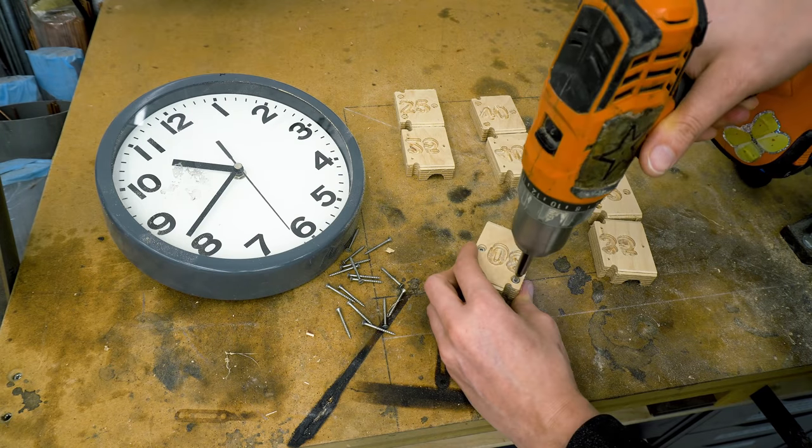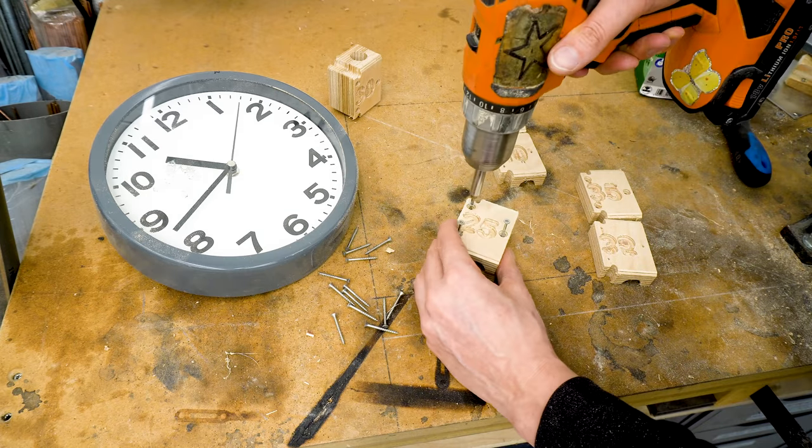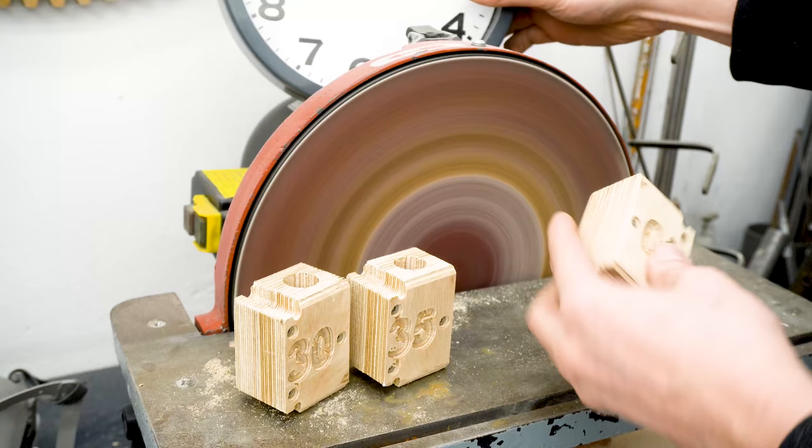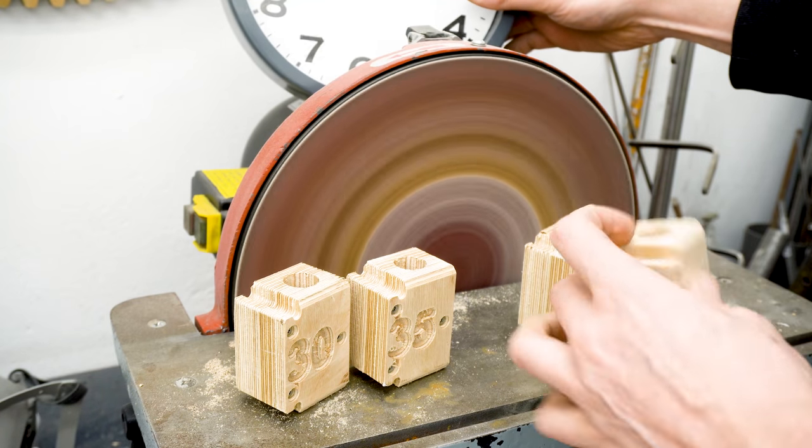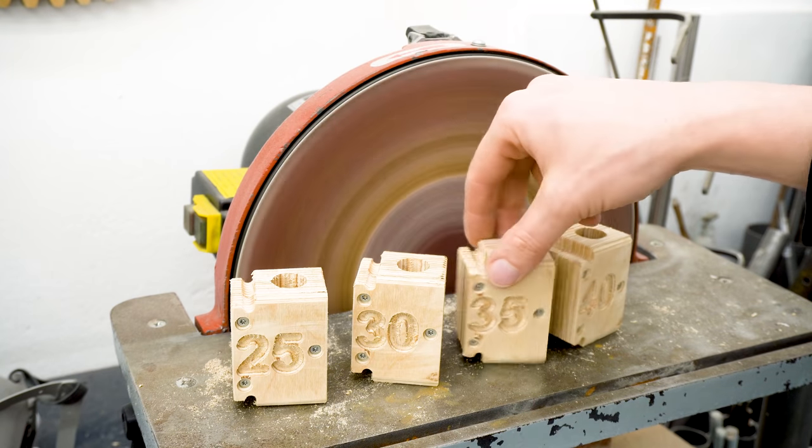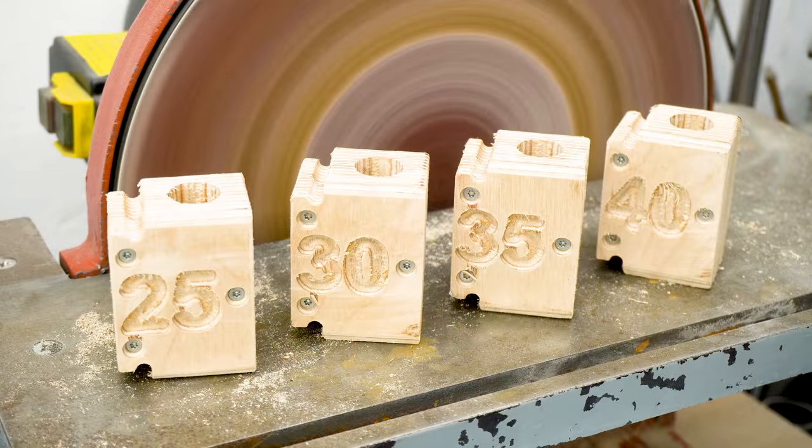So it took actually 30 minutes for the CNC machine to machine these eight pieces. And then I put them together and all in all, from plywood to finished parts, it took 45 minutes. I'm pretty sure this is five or ten times faster than what I did it before, so I'm very happy for this.